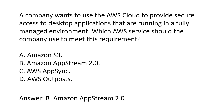Amazon S3 is an AWS service for storing and retrieving data from the cloud. It is not designed for providing secure access to desktop applications. AWS AppSync is an AWS service for building data-driven applications. It is not designed for providing secure access to desktop applications. AWS Outposts is an AWS service for running AWS infrastructure on-premises. It is not designed for providing secure access to desktop applications.